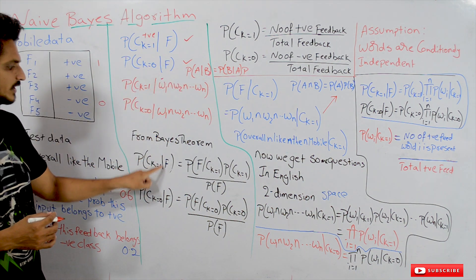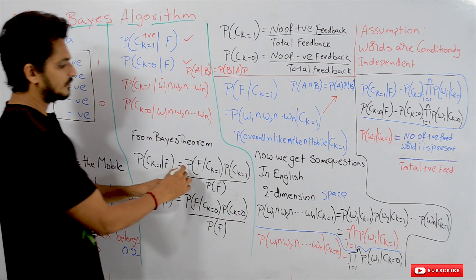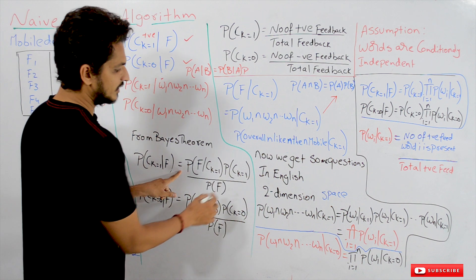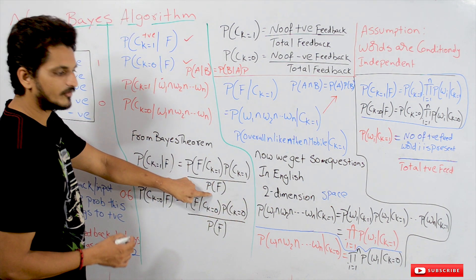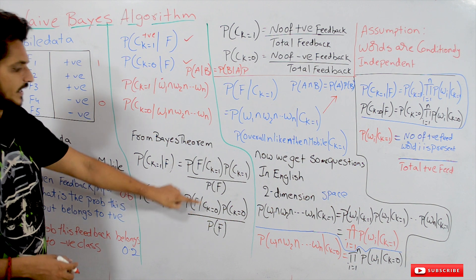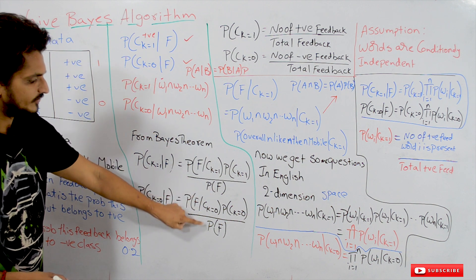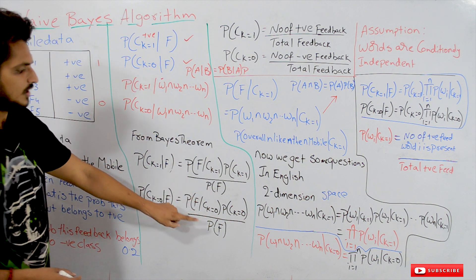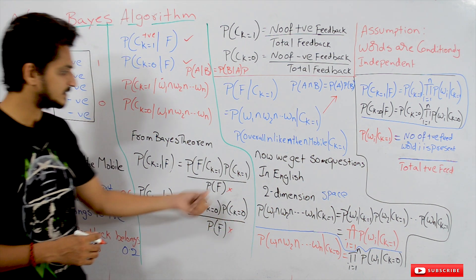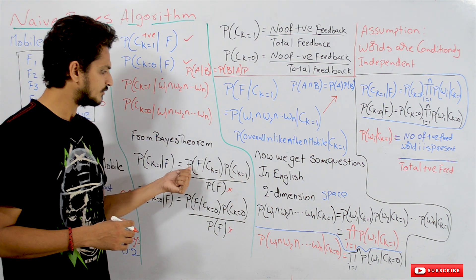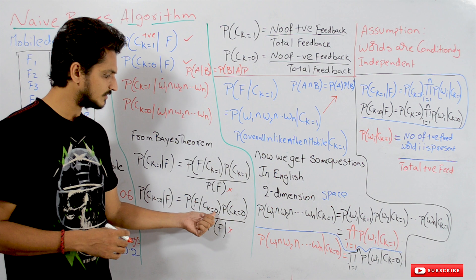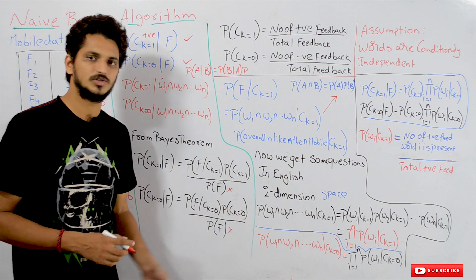Similarly, P(CK=0 | F) = P(F | CK=0) · P(CK=0) / P(F). The denominators are the same for both equations, so there is no need to calculate P(F). What we have to calculate is: P(CK=1), P(F | CK=1), P(F | CK=0), and P(CK=0).